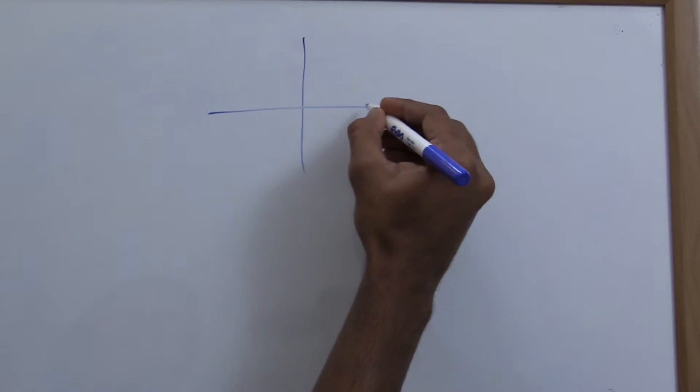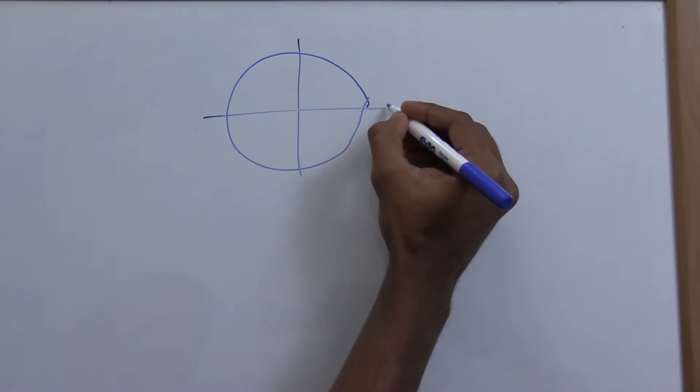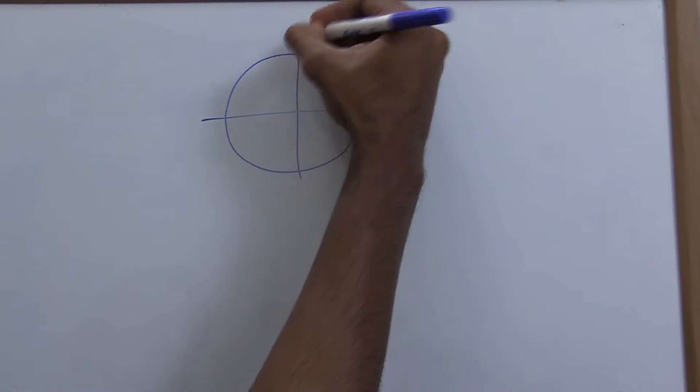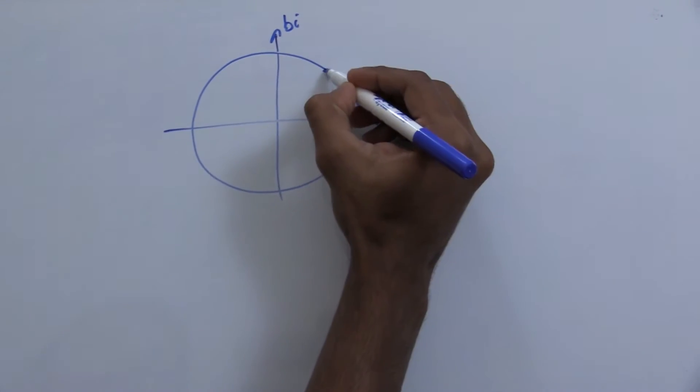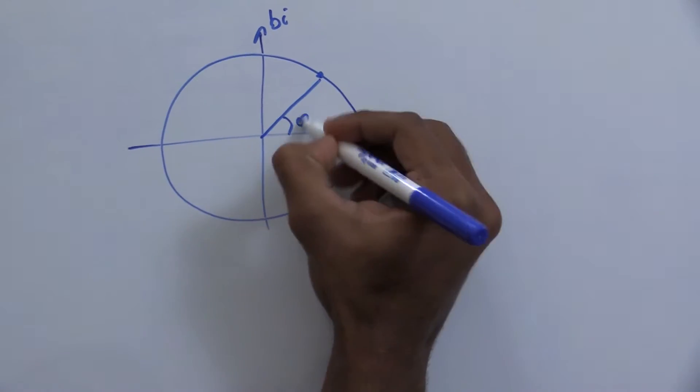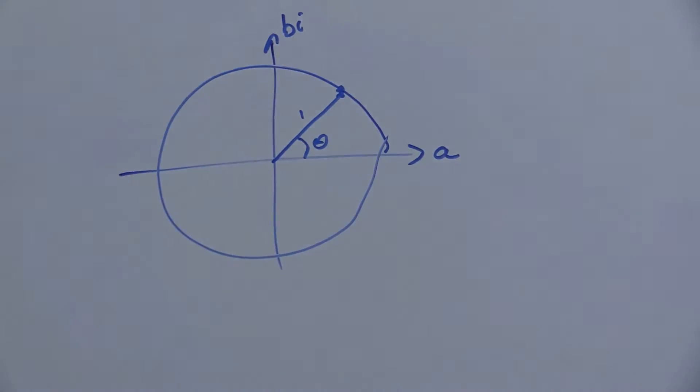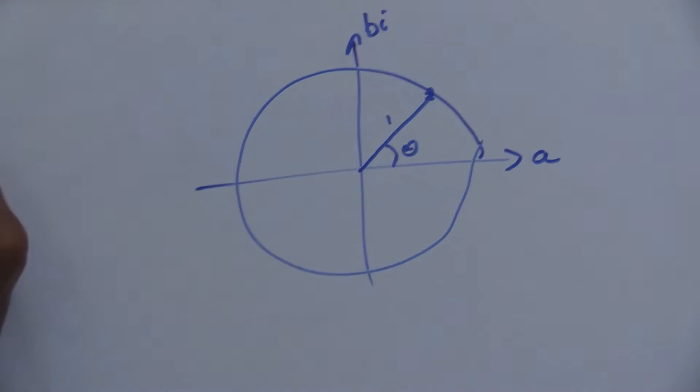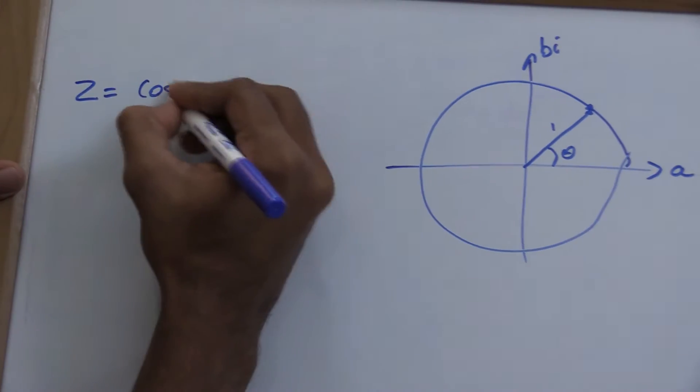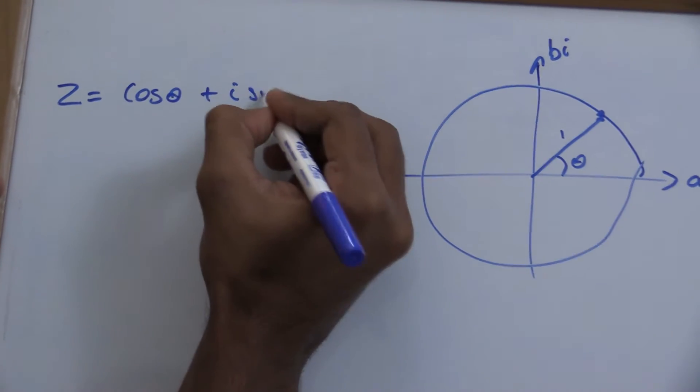To prove this equation, I'll start by drawing a unit circle in the complex plane with a real axis and imaginary axis. Every point on the circle has some angle θ and a modulus of 1, so every point can be represented as z equals cosine of θ plus i sine of θ.